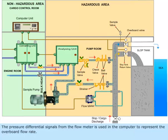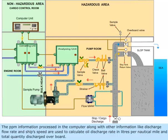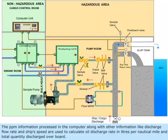The pressure differential signals from the flow meter are used in the computer to represent the overboard flow rate. The ppm information processed in the computer, along with other information like discharge flow rate and ship speed, are used to calculate oil discharge rate in liters per nautical mile and total quantity discharged overboard.